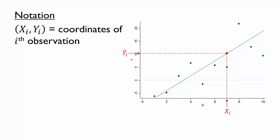We distinguish this predicted y for observation i from the actual value by adding a hat symbol over the y. So ŷᵢ is the predicted value for observation i.